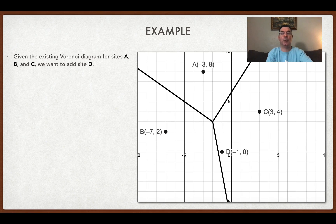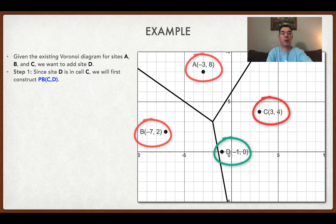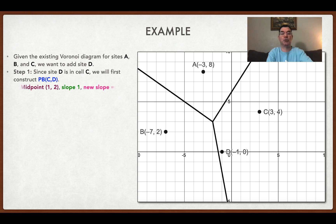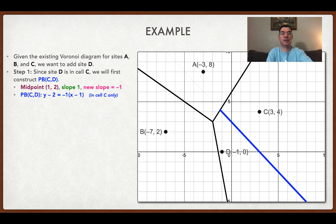Here's another example. We have sites A, B, and C again, and I've added site D. D is in the cell that has C in it, so I'm going to draw a perpendicular bisector between C and D. The midpoint between those two points is (1, 2). The existing slope is 1, so the slope of the perpendicular bisector is going to be negative 1. The perpendicular bisector has equation y minus 2 equals negative 1 times (x minus 1), and I'm only drawing that in the cell that has C in it. Now I create a vertex because I've hit an edge.